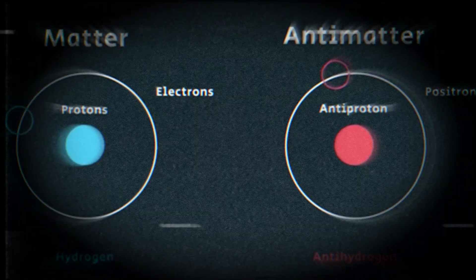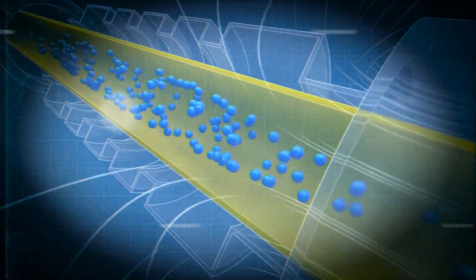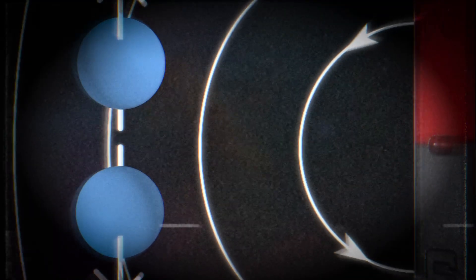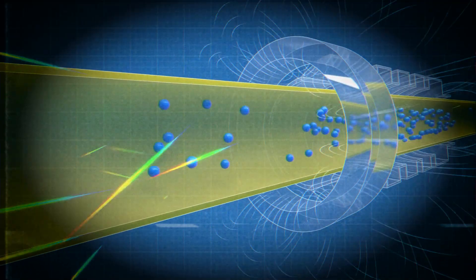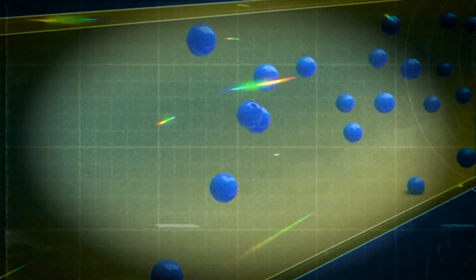And here's the catch. Matter and antimatter don't coexist politely. They are mortal enemies. The instant they meet, they annihilate each other, vanishing into pure energy. Nothing but a bright flash of light. Equal amounts of both mean no survivors.